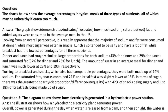Dinner and lunch had roughly similar, large proportions for both sodium — 43% for dinner and 29% for lunch — and saturated fat — 37% for dinner and 26% for lunch. The amount of sugar in an average meal for dinner and lunch was much lower at 23% and 19% respectively.